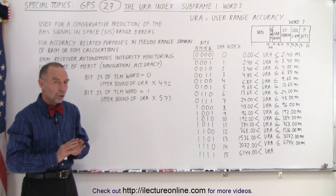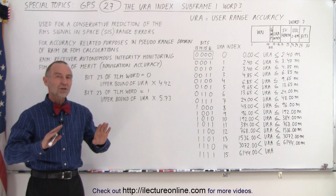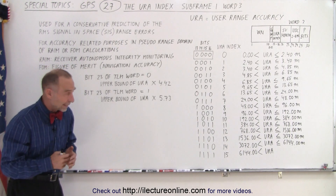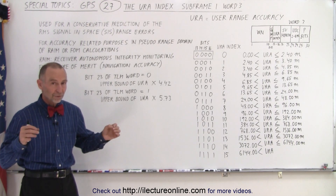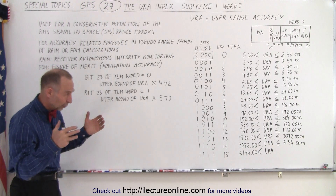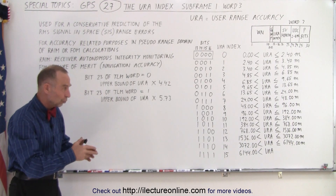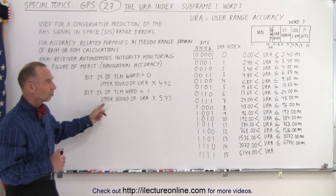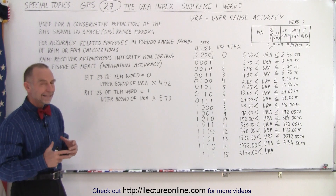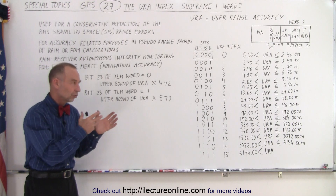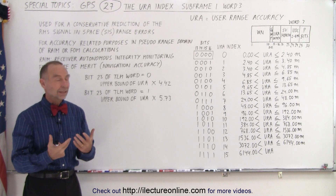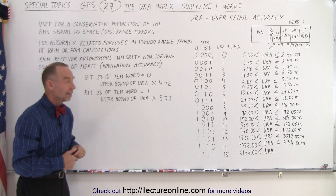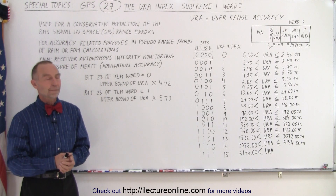Again, that's just to get you an initial range error estimate — not at all what you're going to end up with when you start tracking multiple satellites and really getting into where exactly you are using GPS. But for the initial start on the range error estimate, you start with the URA index, calculate it based on TLM bit number 23, and then go from there.